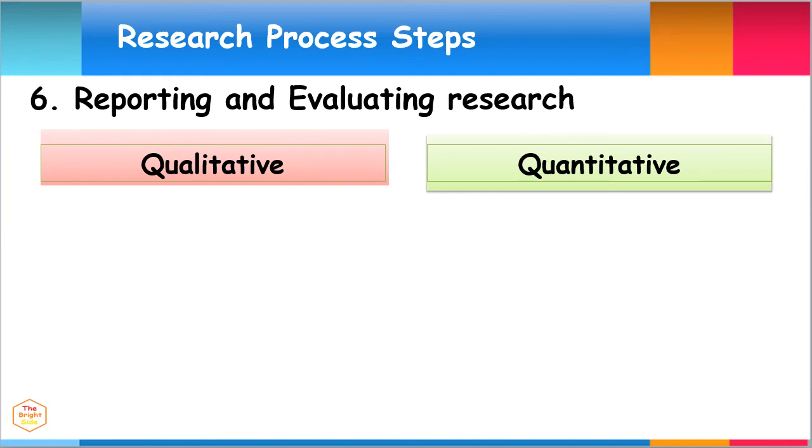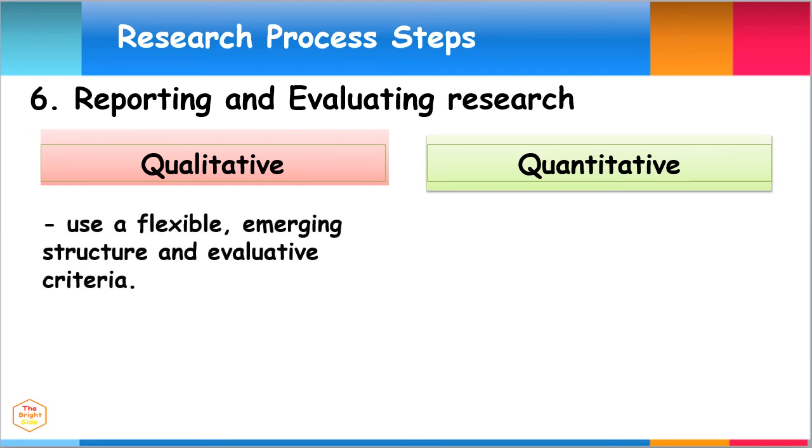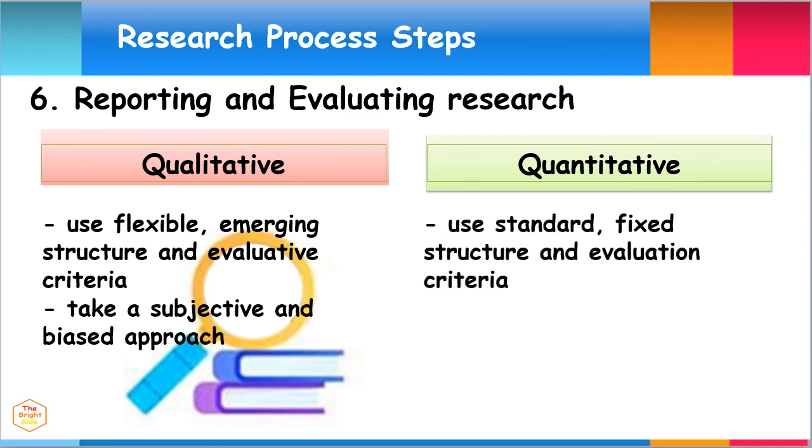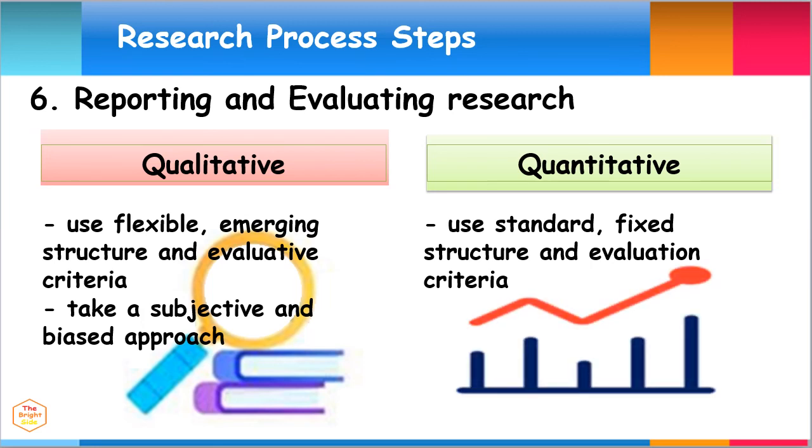In qualitative research, reporting and evaluation of findings tends to use a flexible, emerging structure and evaluative criteria. It mostly takes a subjective and biased approach. In quantitative research, reporting and evaluating tend to use standard, fixed structure and evaluation criteria. It mostly takes an objective and unbiased approach.